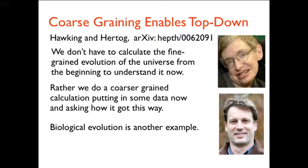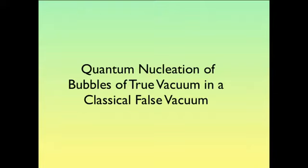Coarse graining, in a sense, enables what Hawking and Hertog call top-down reasoning in cosmology. We don't have to calculate the fine-grained evolution of the universe from the beginning all the way to the end to make probabilities for what we see today. We'd rather do a coarser grained calculation, putting in some data now, an initial condition, and asking how it got to be that way. That's top-down reasoning, and it's enabled by what I just described in quantum mechanics. So I now want to say how that applies to the quantum nucleation of bubbles in a true vacuum in a classical false vacuum.